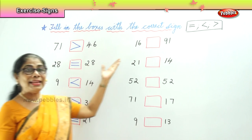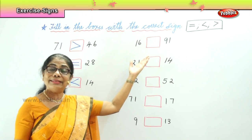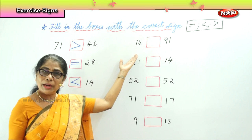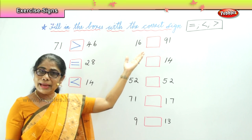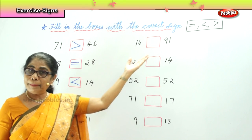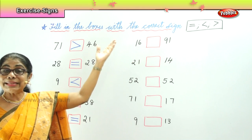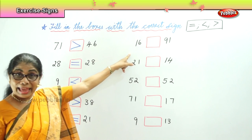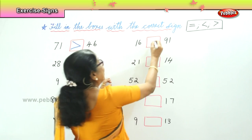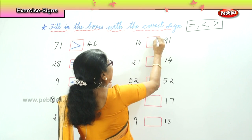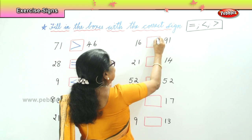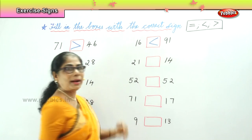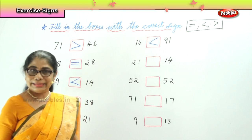Now we have 16 and 91. 16 is the small number, 91 is the big number. So 16 is less than 91. Remember the sign — less than. 16 less than 91.